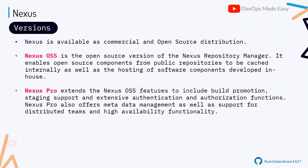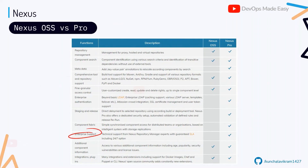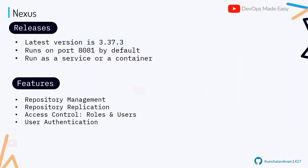Nexus Pro has extra features like staging support, enhanced authentication and authorization, enterprise LDAP integration, and staging/release management — features not available in OSS. For most use cases, Nexus OSS is sufficient. The latest version is 3.37. Similar to Jenkins, you can run Nexus as a service or as a Docker container. By default it runs on port 8081, unlike Jenkins which runs on 8080, and this port can be configured.